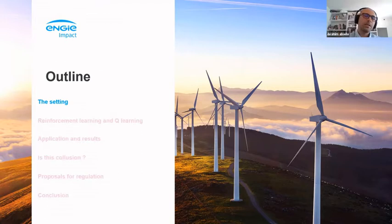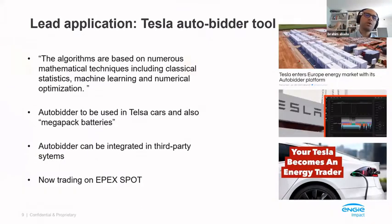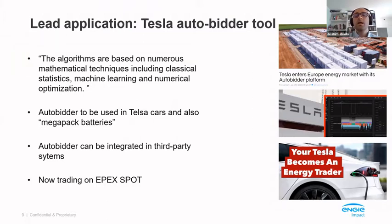The main setting is inspired by the current situation of Tesla. Tesla has been recently granted a license to trade electricity on EPEX. So basically Tesla can sell and buy electricity from markets. We know Tesla has a huge capacity, and very importantly, Tesla is also advertising the use of — according to their website — machine learning and operations learning algorithms combined together.